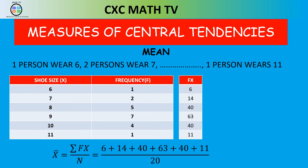Then add up the sum of F×X and divide by N, where N is the total frequency. Adding 1+2+5+7+4+1 gives 20. When we add up all the F×X values and divide by 20, we get 8.7 — the mean shoe size.